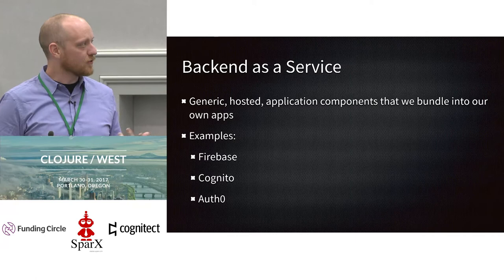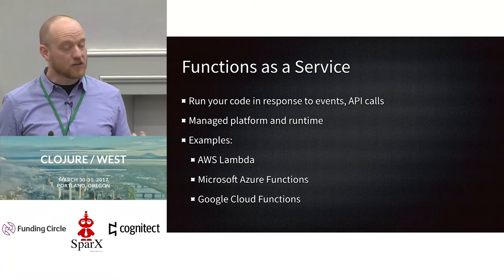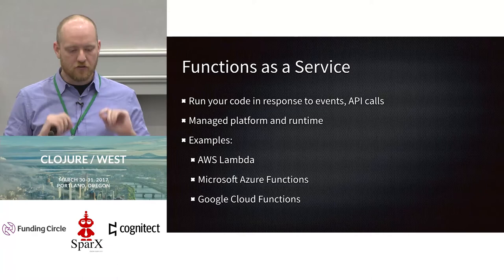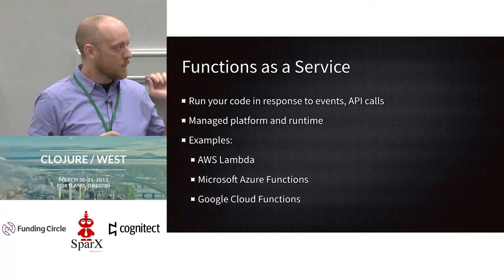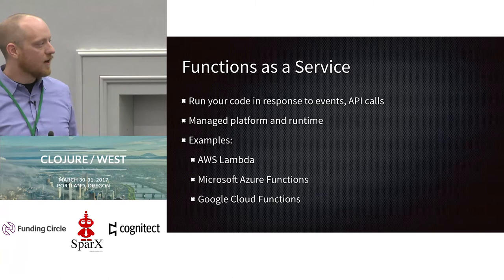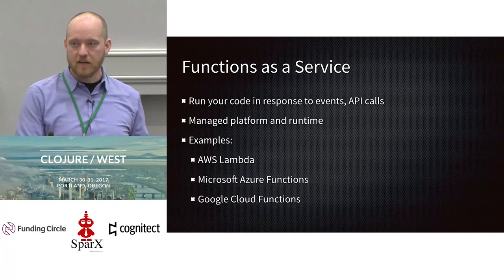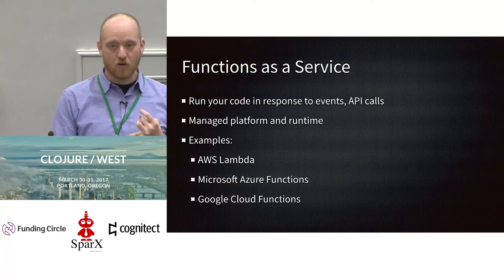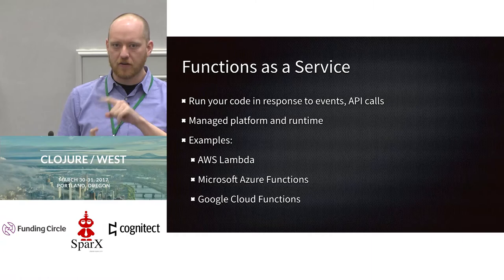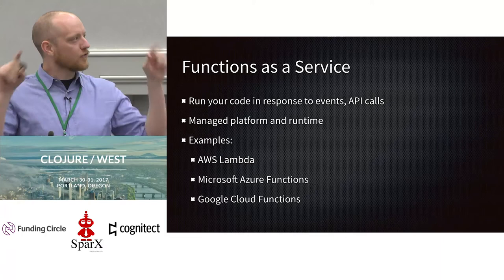The other area, and the one that's the subject of today's talk, is Functions as a Service. These are platforms where you take a little bit of code, ship it to the platform, and it gets run in response to events or API calls. The platform and runtime are managed. Examples include AWS Lambda, Microsoft Azure Functions, Google Cloud Functions (recently out of alpha into beta), OpenWhisk, Auth0's WebTask, and others. So there's Backend as a Service and Functions as a Service — those are the two large technical areas of serverless.